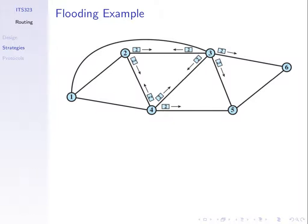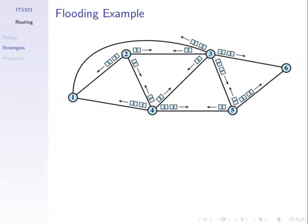Counting all transmissions across all rounds — 12, 18, 22, 26, 34 packets transmitted in this simple case — just to get one packet from node one to node six. So 34 transmissions in the network to get one data packet from node one to node six.